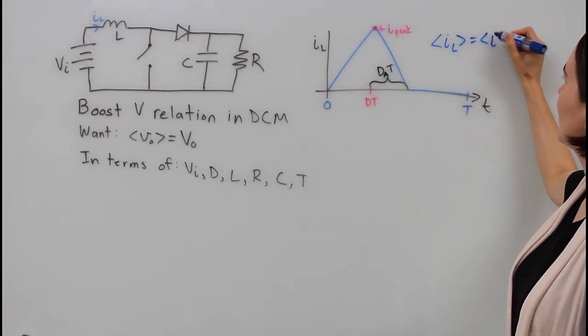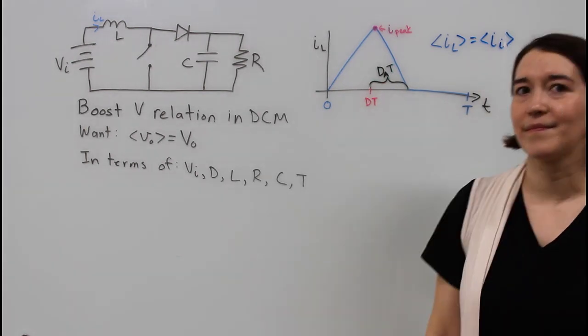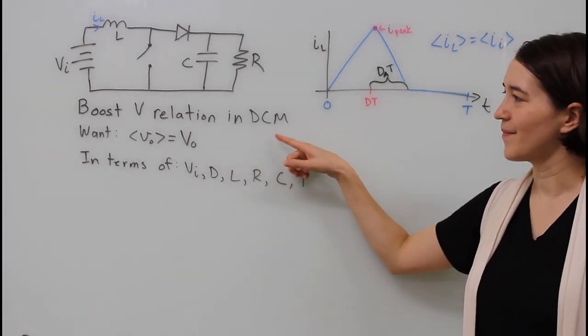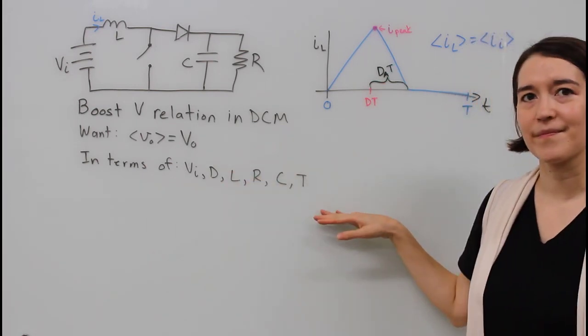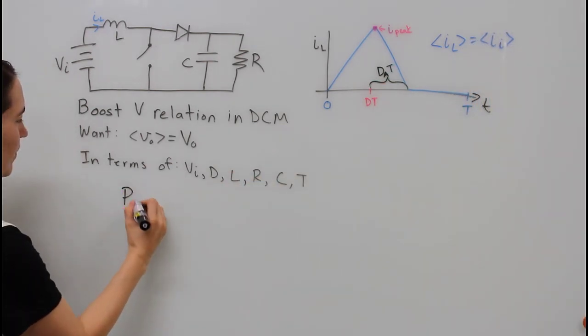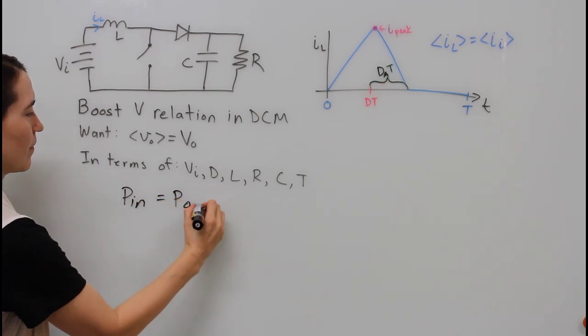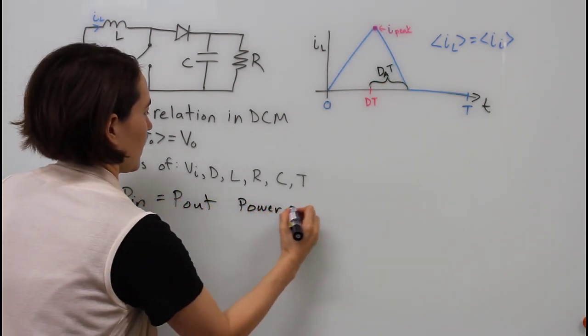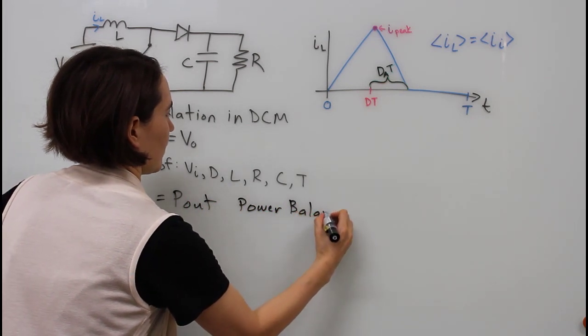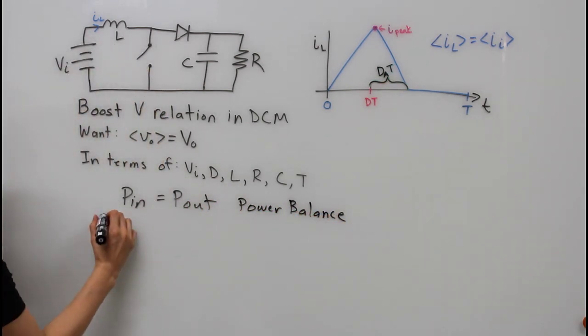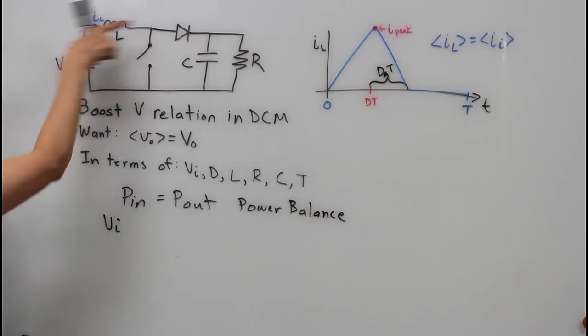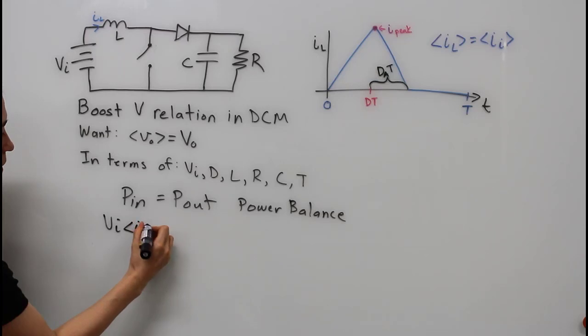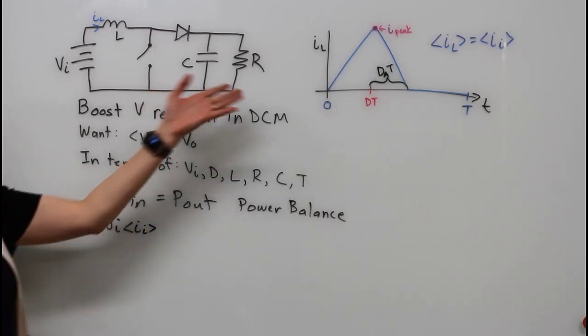With those definitions, we want to find the relationship between the output voltage and those terms. We're going to do that by first looking at a power balance. We know that the input power has to be equal to the output power, assuming there are zero losses in our system.